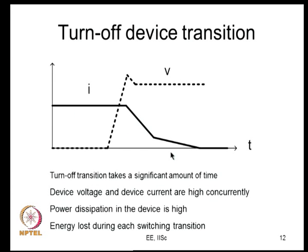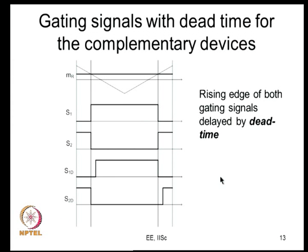That is the idea of dead time: the bottom device is the outgoing device - turn it off first. The incoming top device is not turned on immediately - you delay by the dead time. Again at the other edge, the top device is the outgoing device - switch it off first, then the incoming bottom device switches on after a short interval. In effect, you are delaying the rising edges of both S1 and S2 by time Td, while doing nothing to the falling edges.